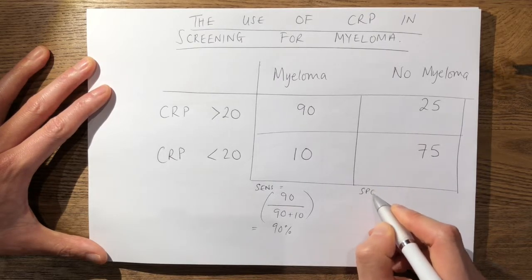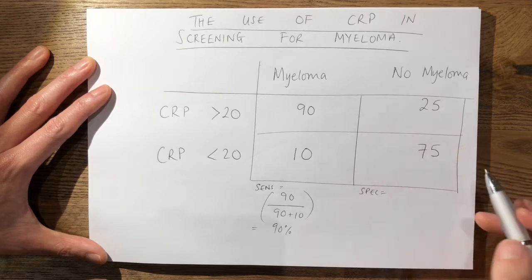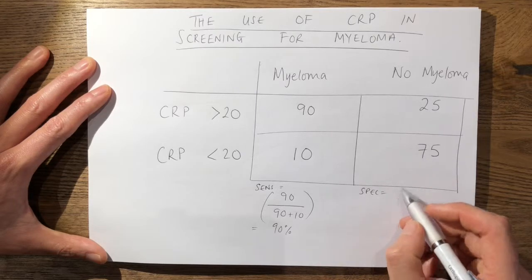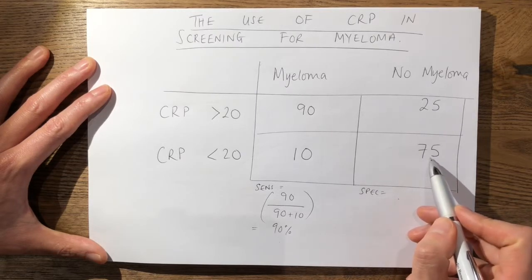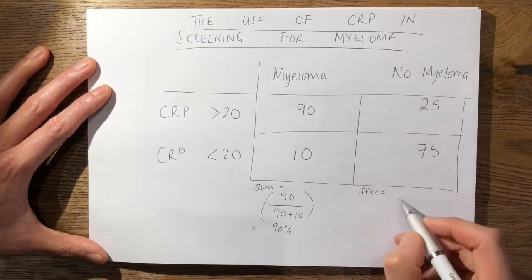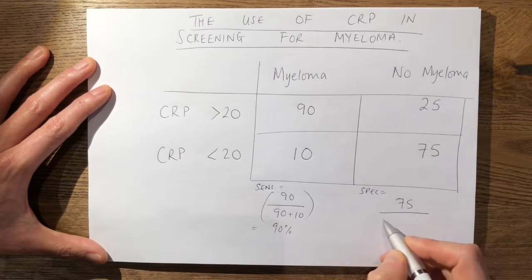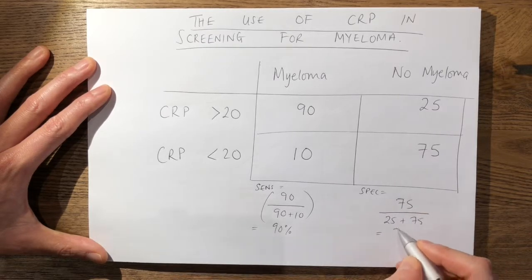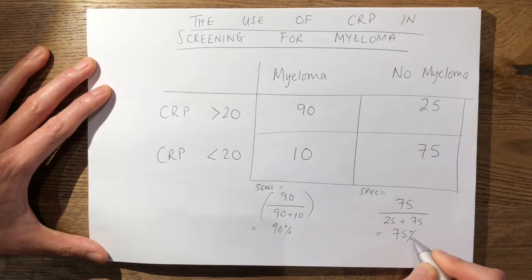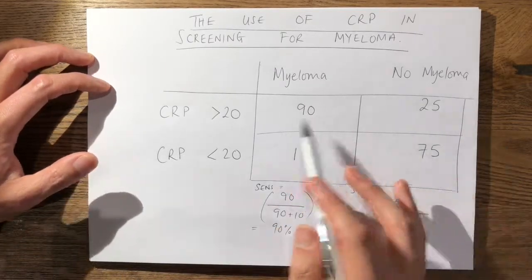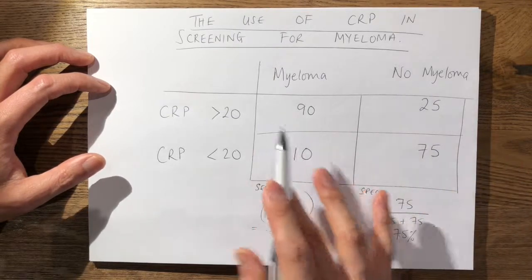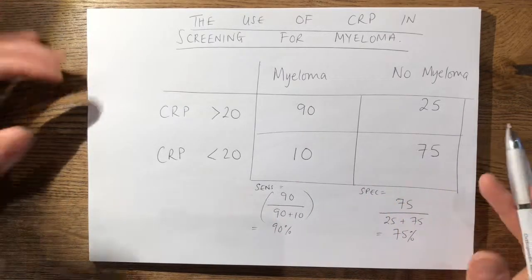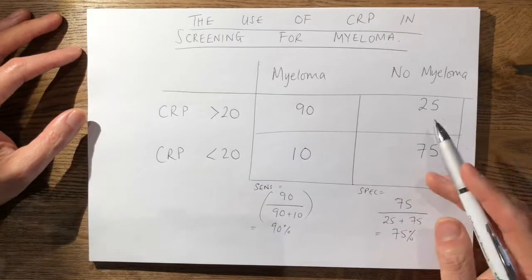For the specificity — your true negative rate — this is worked out by true negatives divided by false positives plus true negatives. In this case, it's 75 divided by 25 plus 75, which equals 75%. I've chosen very simple numbers here, and in the exam they won't give you difficult fractions — they'll keep it simple just to illustrate that you understand the principles of working out sensitivity and specificity.